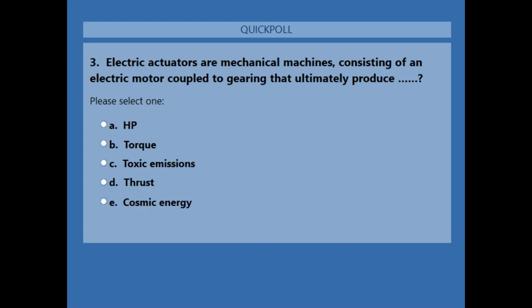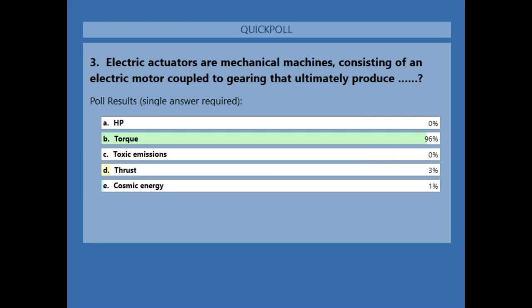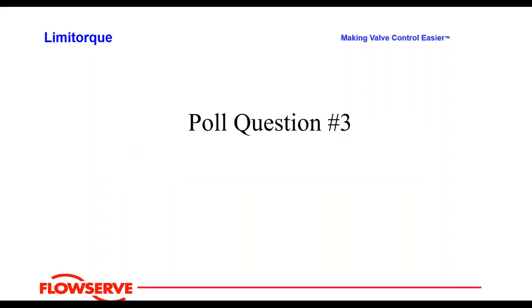Poll Question 3: Electric actuators are mechanical machines consisting of an electric motor coupled to gearing that ultimately produce what? The answer is B — torque. Ninety-six percent answered correctly.